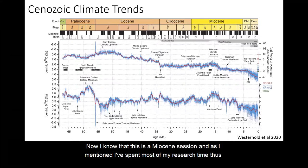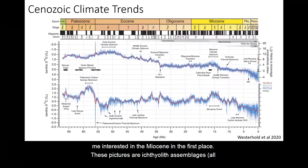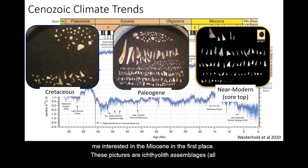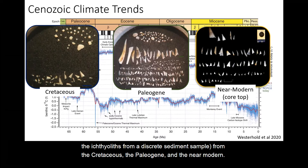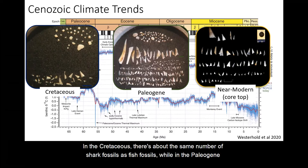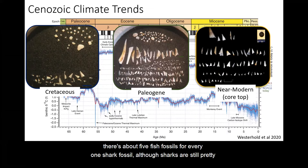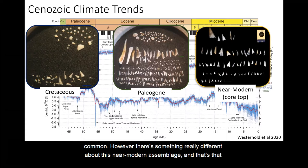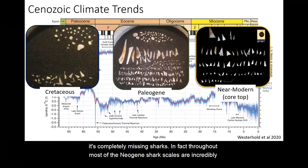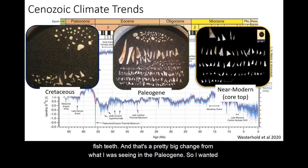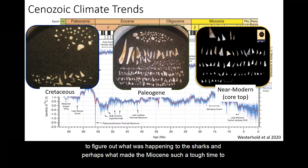I know that this is a Miocene session, and as I mentioned, I've spent most of my research time thus far in the Cretaceous and Paleogene. So to really motivate this story, I'd like to share what got me interested in the Miocene in the first place. These pictures are ichthyolith assemblages — all the ichthyoliths from a discrete sediment sample — from the Cretaceous, the Paleogene, and the near-modern. In the Cretaceous, there's about the same number of shark fossils as fish fossils. In the Paleogene, there's about five fish fossils for every one shark fossil, although sharks are still pretty common. However, there's something really different about this near-modern assemblage, and that's that it's completely missing sharks. In fact, throughout most of the Neogene, shark scales are incredibly rare in the open ocean microfossil record. I find about one shark fossil for every hundred or more fish teeth, and that's a pretty big change from what I was seeing in the Paleogene.